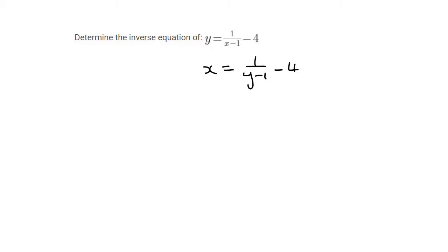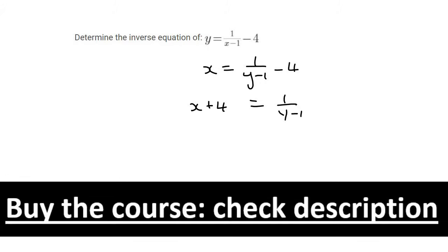Now you want to get y alone again, so what we do is we say x plus 4 equals 1 over y minus 1.